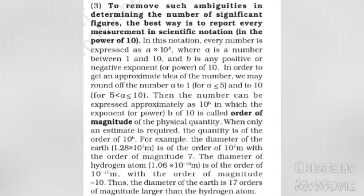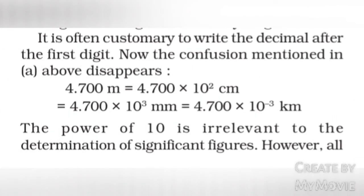For example, the diameter of Earth, 1.28 × 10^7 m, is of the order of 10^7 m, with order of magnitude 7. Thus, the diameter of the Earth is 17 orders of magnitude larger than the hydrogen atom. It is often customary to write the decimal after the first digit. Now, 4.700 m equals 4.700 × 10^2 cm, which equals 4.700 × 10^3 mm, which equals 4.700 × 10^-3 km. The power of 10 is irrelevant to the determination of significant figures.